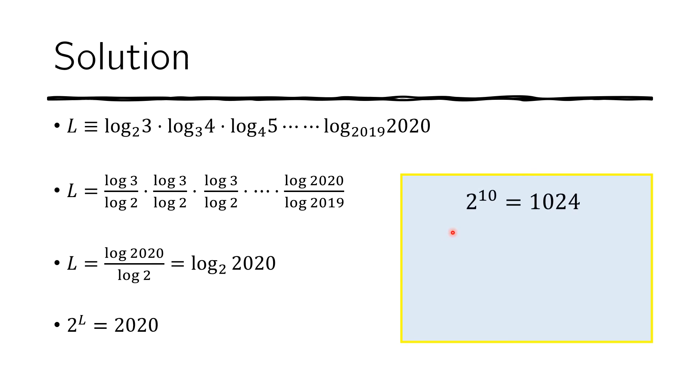And now we notice the following. We notice that 2 to the 10 is 1024. Then we have 2 to the L is 2020. And 2 to the 11 is actually 2048. So 2020 falls between 2 to the 10 and 2 to the 11.